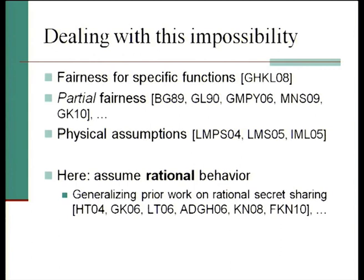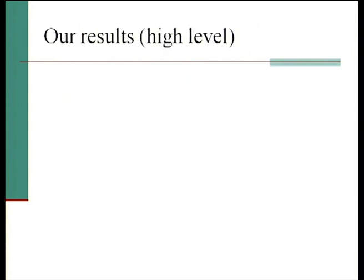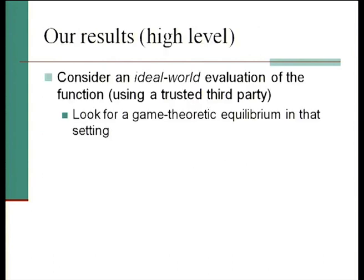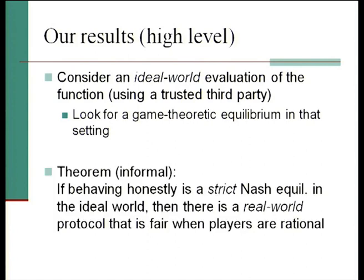What we do in this talk is assume rational behavior. This has been done before with other problems, in particular rational secret sharing. We assume the parties have well-defined goals that we know when we design the protocol, and we design a protocol that achieves the goal when parties behave rationally. Our results look at an ideal world with a trusted third party, find a game-theoretic equilibrium there, and if behaving honestly in that ideal world is a strict Nash equilibrium, we give a real-world protocol where rational players will follow the protocol and their output will be fair.